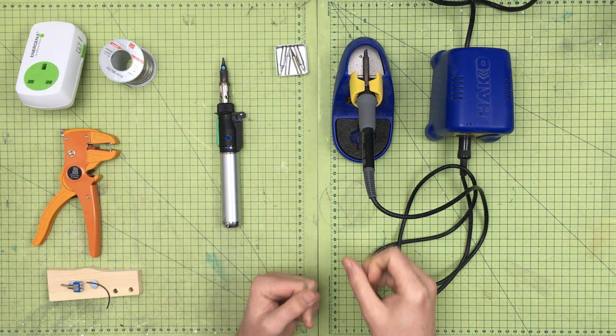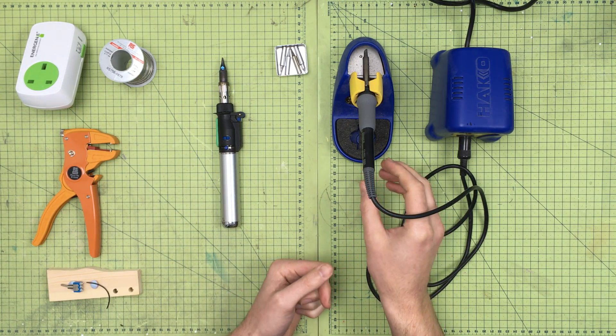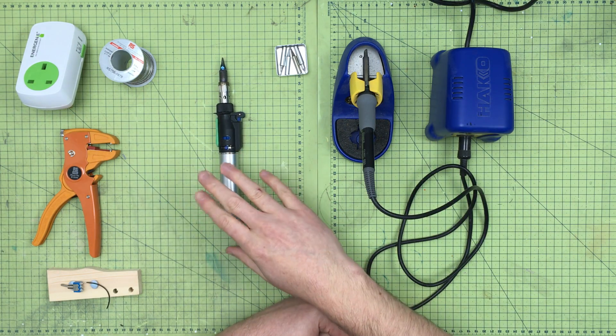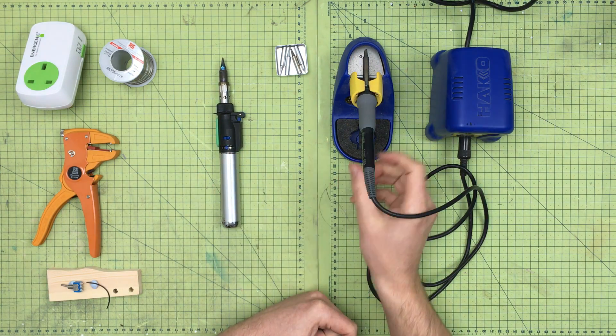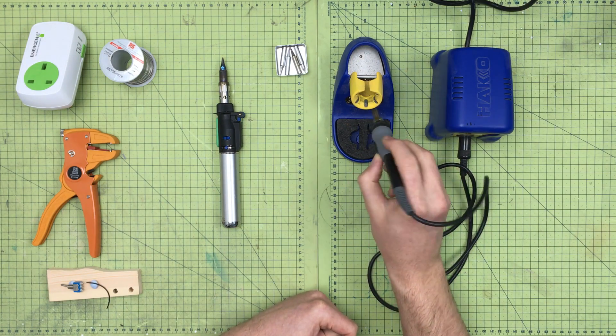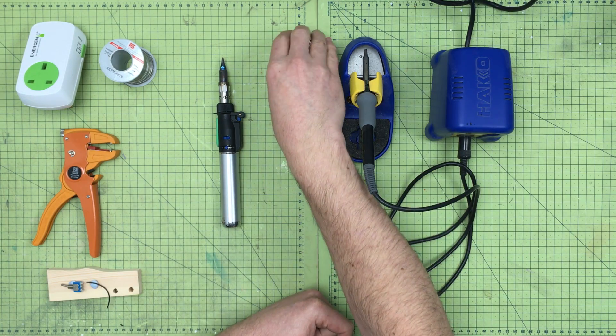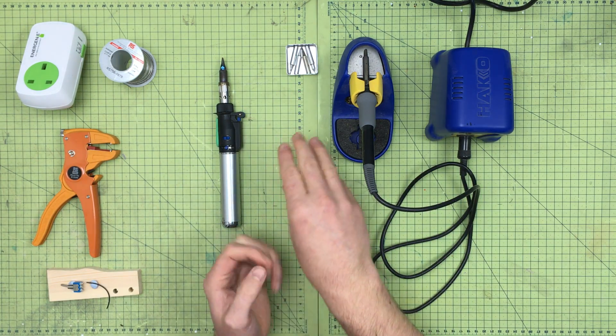So pros and cons are quite simply: this has a really good temperature controller, this is a little bit vague and you kind of have to guess it. This obviously comes with all the nice stands and cleaning pads, and you can change the temperature quite accurately.